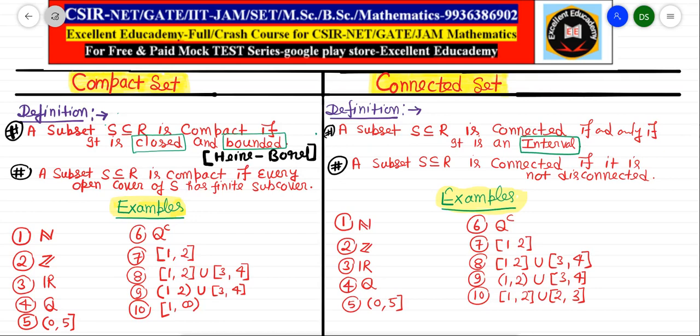Hello friends, welcome again to this video lecture series. This is the third lecture of point set topology. In the first lecture we covered neighborhood of a point, in the second lecture we covered open sets and closed sets with several counter-examples. In this third lecture, we discuss what is a compact set and what is a connected set, and we see several counter-examples to understand when a set is compact or connected.